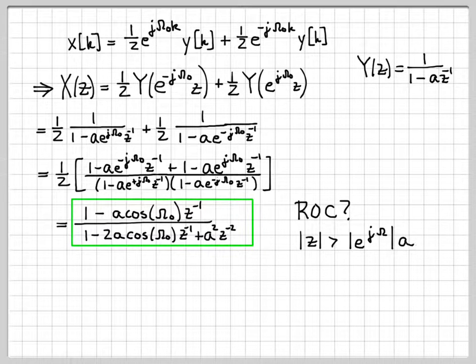I know that the region of convergence, when I apply the multiplication by an exponential sequence property, is going to change by the magnitude of the number in the exponential sequence. Here the number was essentially e^(jω₀). However, the magnitude is 1.